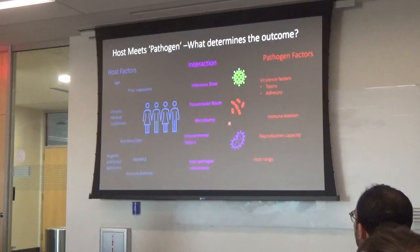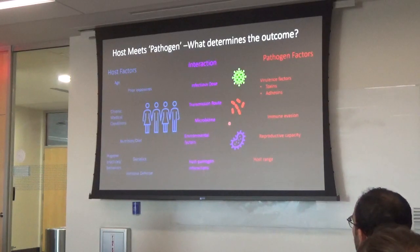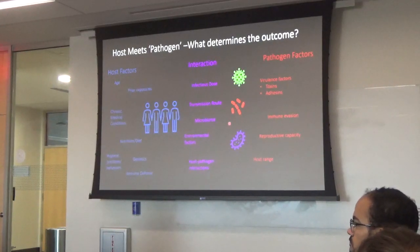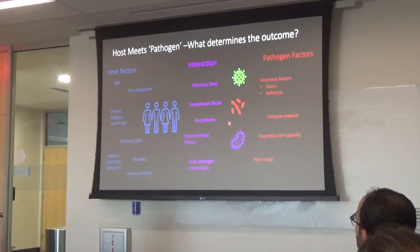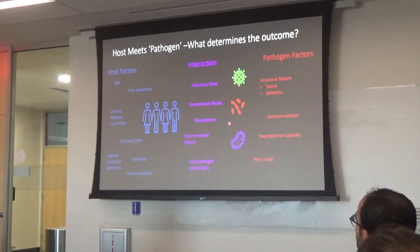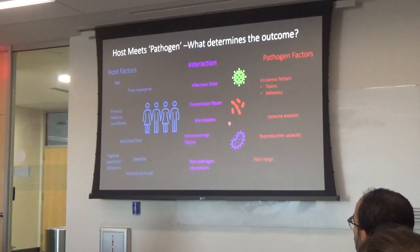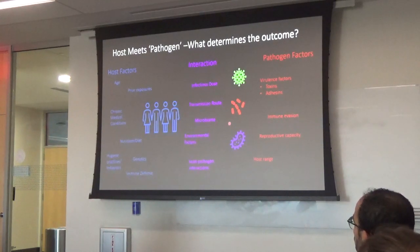When a pathogen — and we use that term in quotes because we have a better understanding that most of the time there are very few obligate pathogens, meaning ones that have to make a person sick — when we understand the microbiome more, we recognize we have a lot of opportunistic pathogens: bacteria that live with us without causing problems unless they get into the wrong setting. So when a host meets a pathogen, what determines whether a person gets sick?